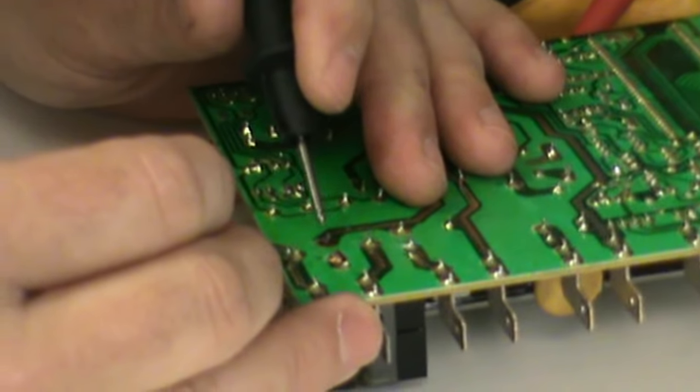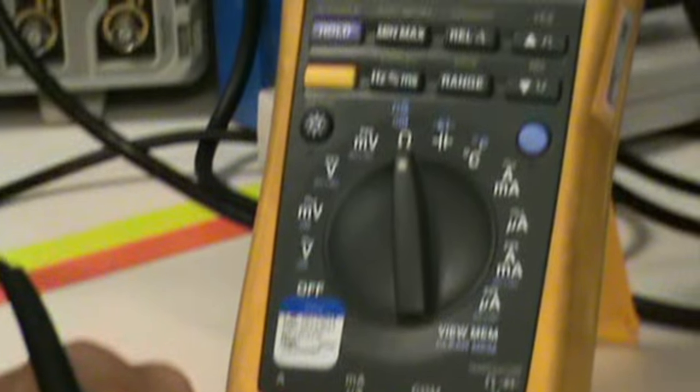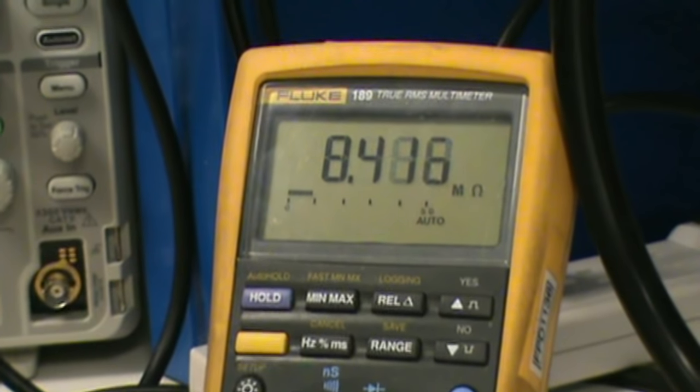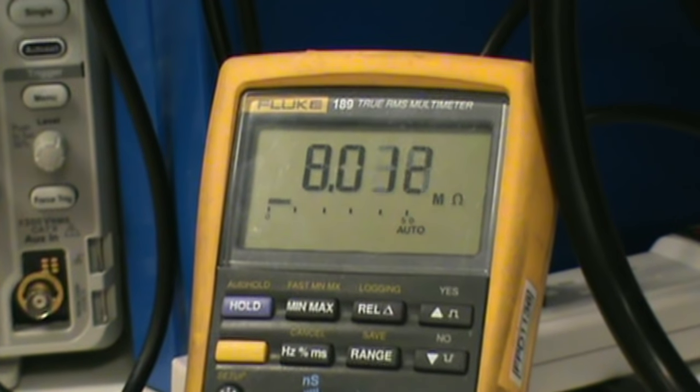Let's check the baked relay. Here's the common, normally closed, see about 10 mega ohms. So obviously the fried relay is fried.